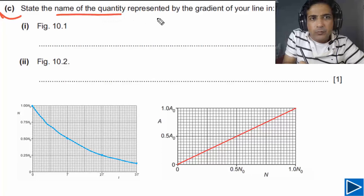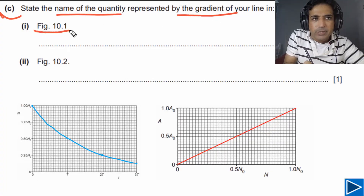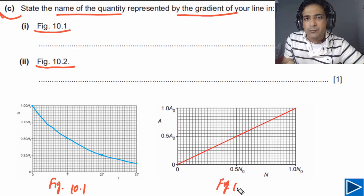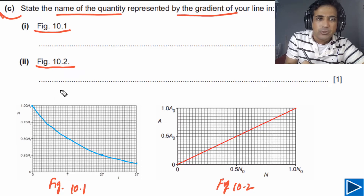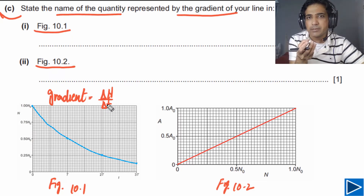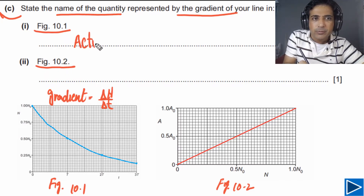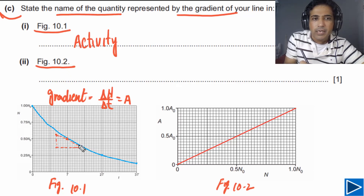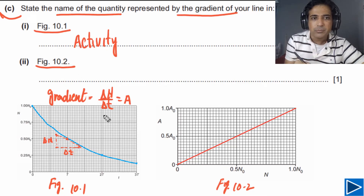For part C, we need to state the name of the quantity represented by the gradient of the line in figure 10.1 and figure 10.2. For figure 10.1, the gradient at any point equals ΔN/Δt — you draw the tangent line and find change in y divided by change in t. ΔN/Δt is the number of decays per second, which equals activity. So the gradient of figure 10.1 represents activity.